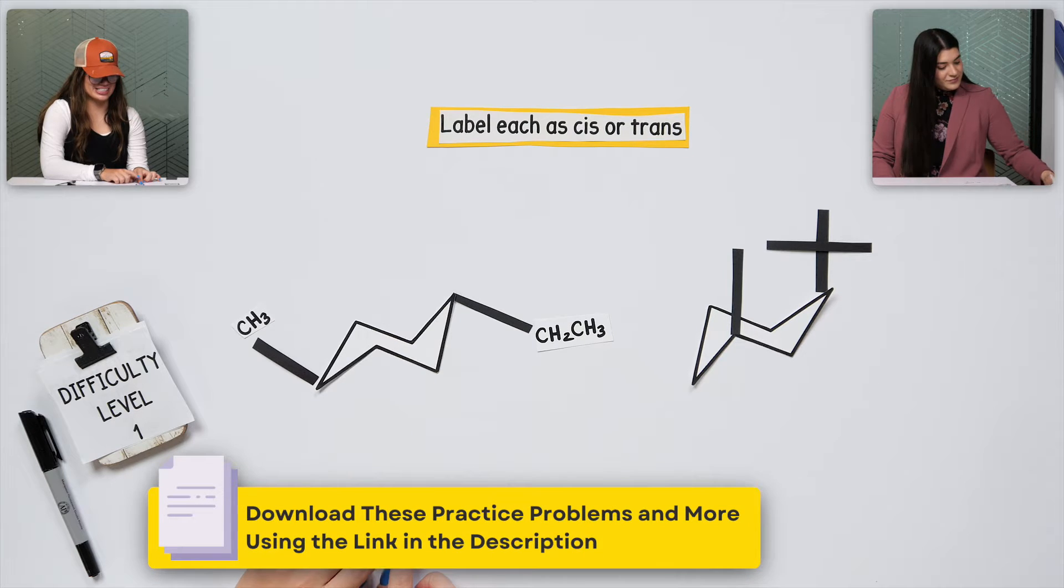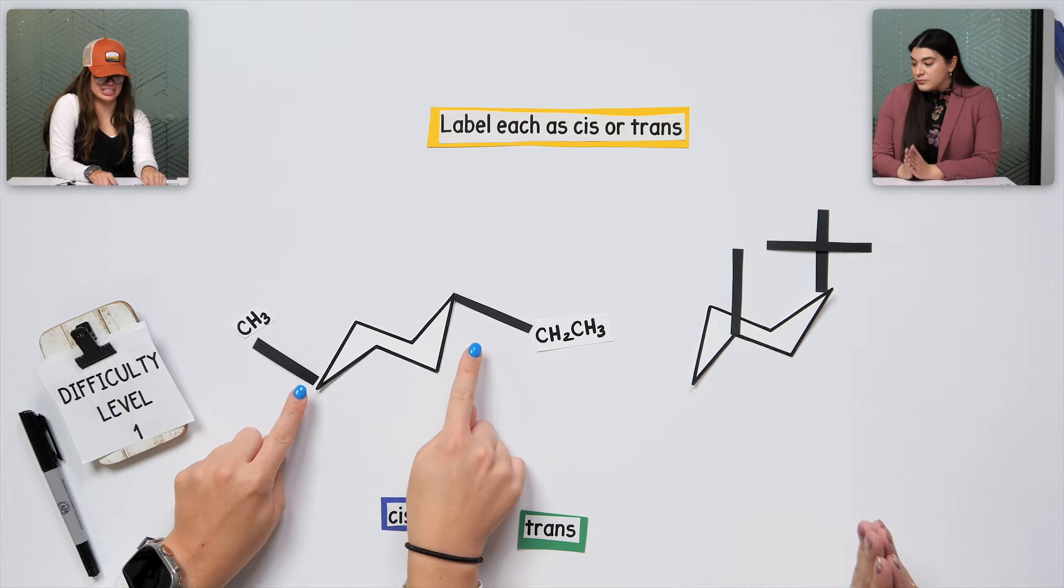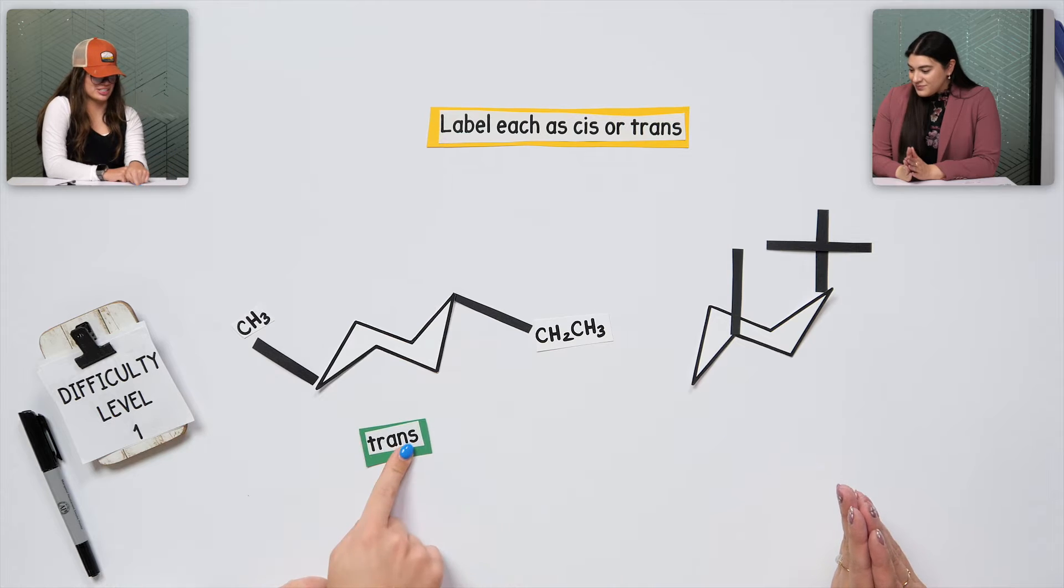So cis is same, and then trans is opposite. Good. So I'm looking at where the branching is happening pretty much. Like, this is going up and this is going down. Good. So I know that's trans.